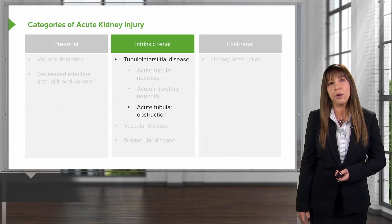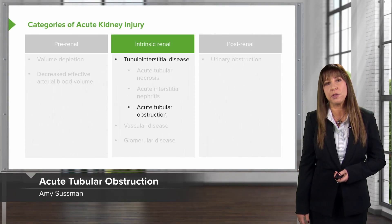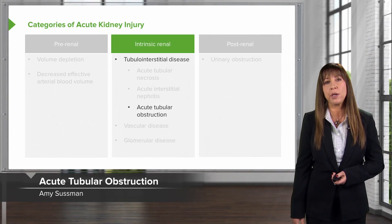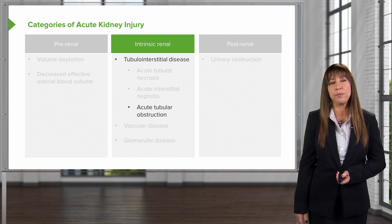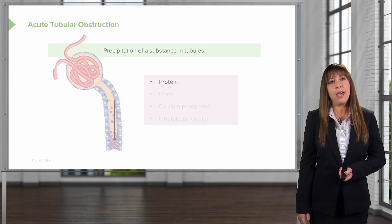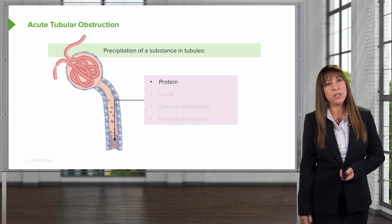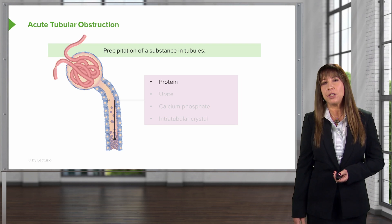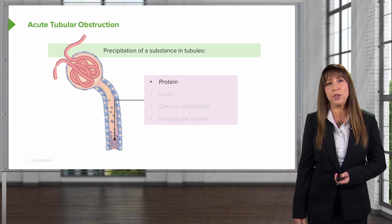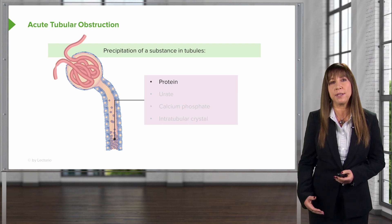Moving forward in our tubular interstitial disease process, we're going to be focusing on acute tubular obstruction. When our patients have acute tubular obstruction, it's essentially precipitation of substances in the tubules.